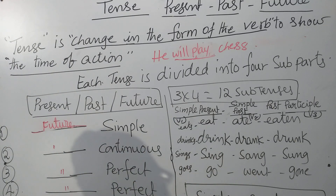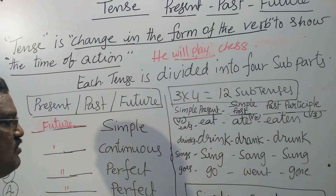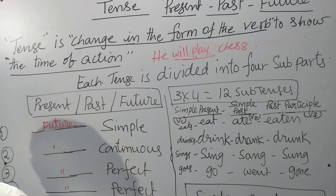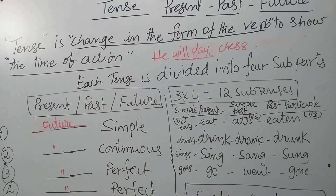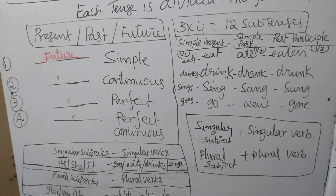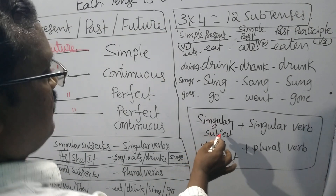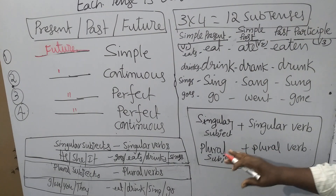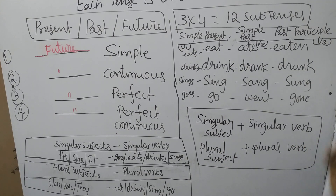Moreover, while you are writing a sentence, first of all we have to take subject, then verb. We have to understand one thing: there is singular subject and plural subject. Singular subject means one person we are taking into consideration. Singular subject takes singular verb; plural subject takes plural verb. We have to follow this formula.